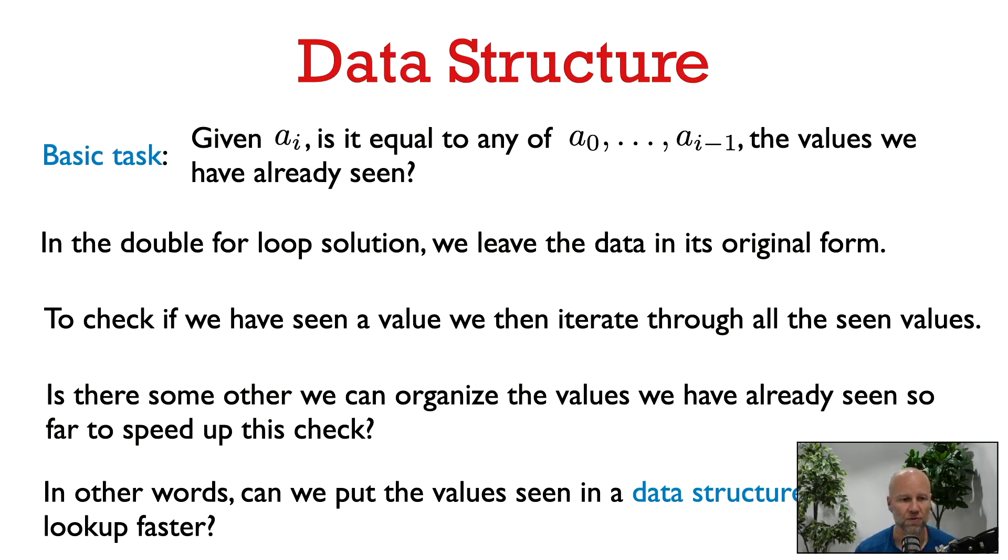When we look at the double for loop algorithm in a more abstract way, the role of the inner for loop is to check if we have already seen the value ai by iterating over all previous values. We are repeating a lot of work here, and it does not seem very efficient. What if we put the values into some data structure, rather than just keeping them in the array itself? Maybe we could use a data structure to make this task of checking if a value is in the data structure faster.